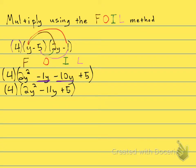And now let's go ahead and distribute through this 4. 4 times 2y squared is 8y squared. 4 times negative 11y is negative 44y. And then 4 times 5 is 20.